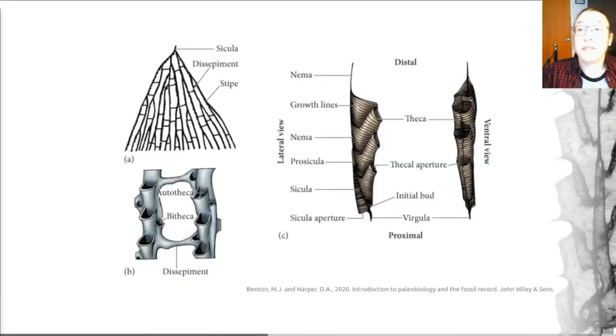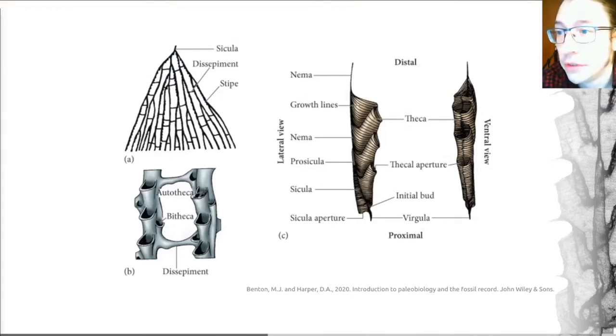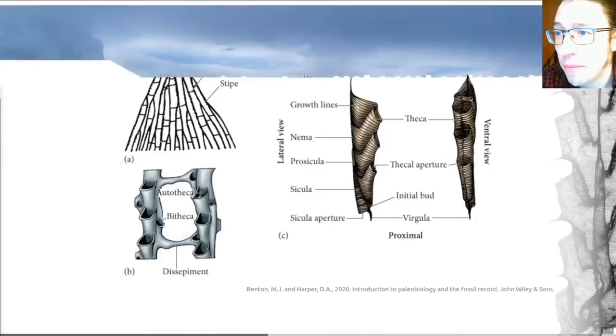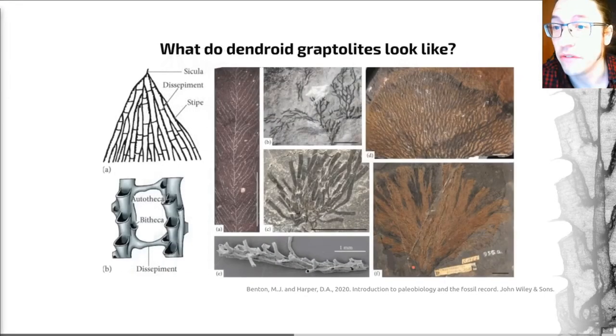There are two important divisions that we need to know about within the graptolites: the dendroids and the graptoloids, or dendroidea and graptoloidea. This does mean that occasionally we have dendroid graptolites and graptoloid graptolites, a bit of a mouthful. The origins and evolution of these groups are matters of current research.